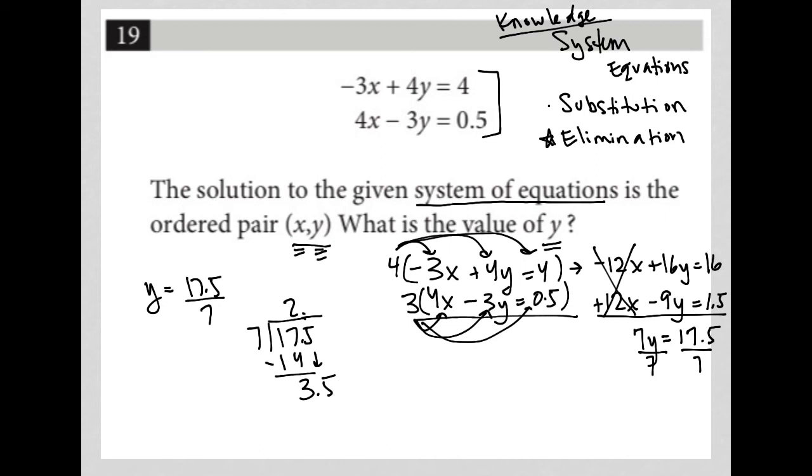What I'll do is I'll add a 0 here, move the decimal to the right once, add a decimal point here, and that makes this 7 into 35, which would be 5. 5 times 7 is 35, leaving me a 0 remainder. So 7 goes into 17.5 2.5 times, and therefore y is equal to 2.5, and that would be my correct answer.